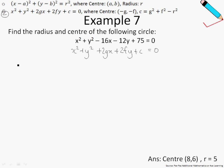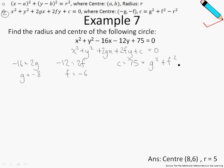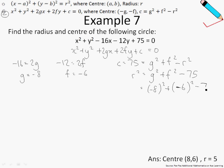At this point, let us observe that negative 16 is equivalent to 2g, so therefore g is just negative 8. And also negative 12 is equivalent to 2f, and therefore f is just negative 6. Finally, c is 75. And c is given by the formula to be g squared plus f squared minus r squared. So solving this, let me shift the terms around — negative r squared to the left, and 75 to the right. Substituting in the values for g and f, and working this out, I'll have 25, which is just 5 squared.